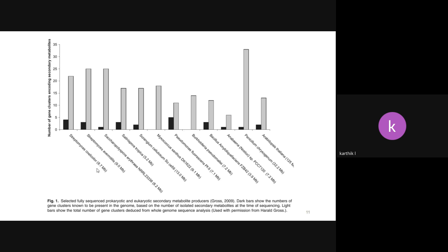Everyone knows that penicillin was isolated from Penicillium chrysogenum or Penicillium notatum. But if asked what other antibiotics have been isolated from these species, no one can answer. Does that mean the strain can produce only one antibiotic? That is not really true. Penicillium chrysogenum after whole genome sequencing was predicted to be capable of producing 33 biosynthetic gene clusters in total, but only one or two molecules have been identified. The remaining 32 are silent genes — we are unable to activate them.